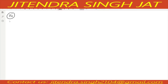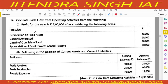Question number 14. Calculate cash flow from operating activities from the following. Profit for the year is given 7 lakhs after considering the following items: depreciation, goodwill amortized, gain on sale of land, and appropriation towards general reserve. The position of current assets and current liabilities with opening and closing balances is given. Let us prepare cash flow from operating activities.